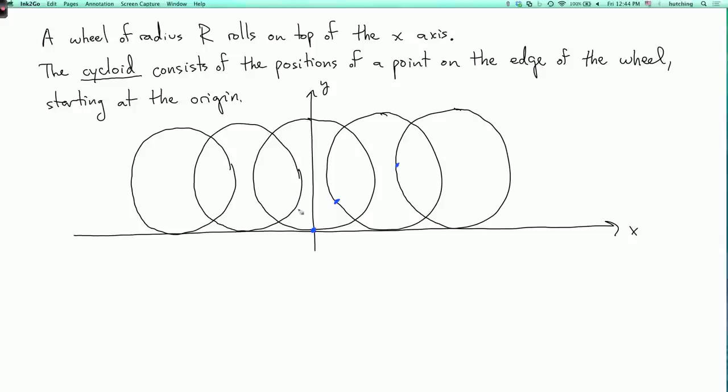When the wheel's to the left, the point's up here somewhere. When it's further to the left, it's up there somewhere. We're going to get a curve looking something like this. And this curve is called the cycloid.